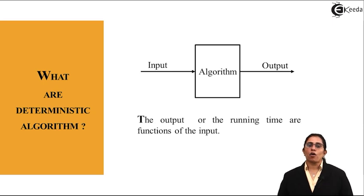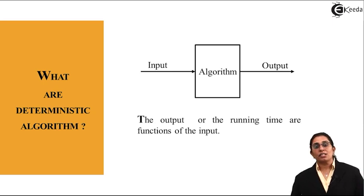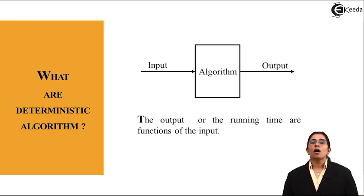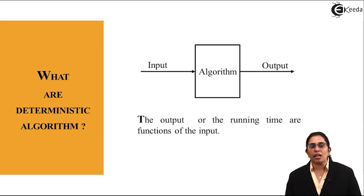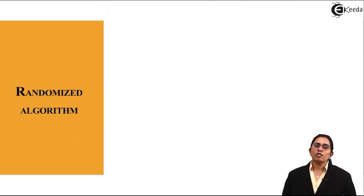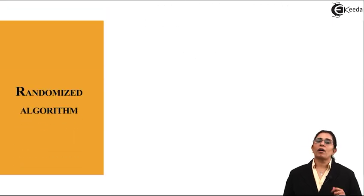We define these algorithms, we design these algorithms that for this particular specified input this is a desired output. There is nothing new that comes into picture when I use a given algorithm. Now what happens when these deterministic algorithms are changed or introduced with some random variables, then comes into picture is a randomized algorithm.